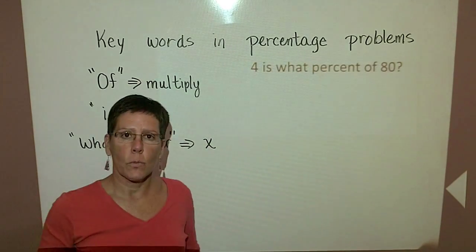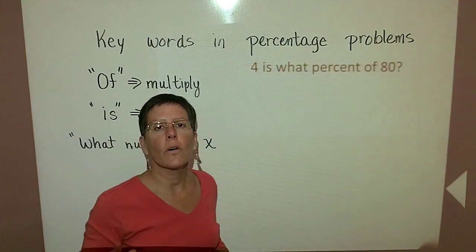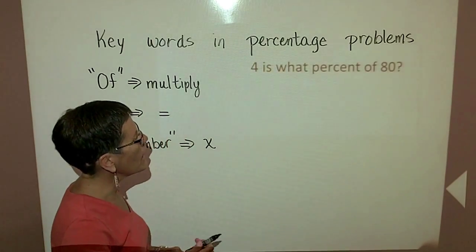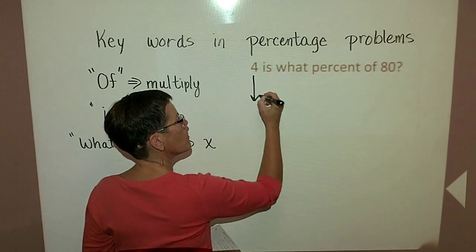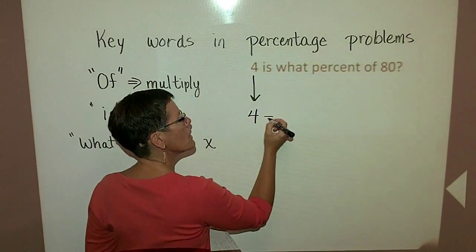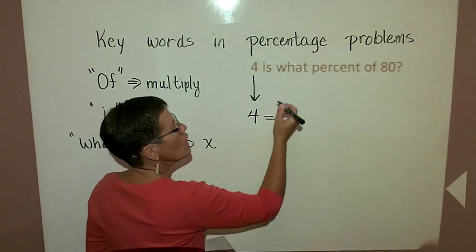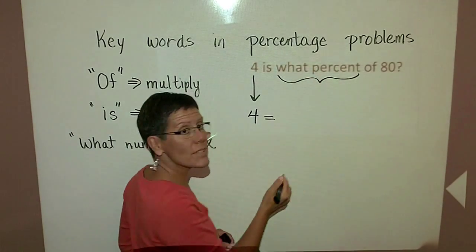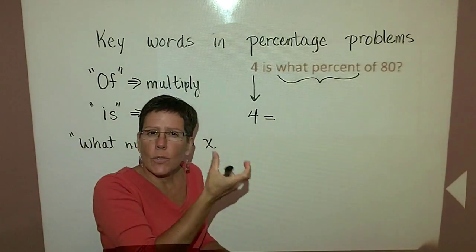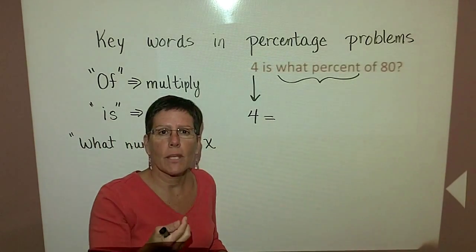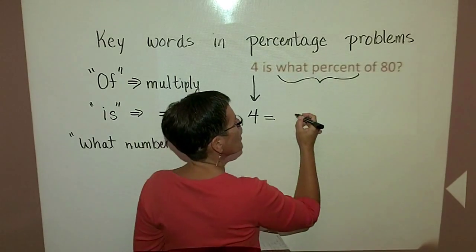Again, using the word 'is' represents equal. The word 'of' represents multiply. When we're given values, we just put them in the mathematical sentence. So for is, in this case, what percent? We've had here what number. I'm going to use that thing I don't know. I'm going to represent it by the letter X. What percent?